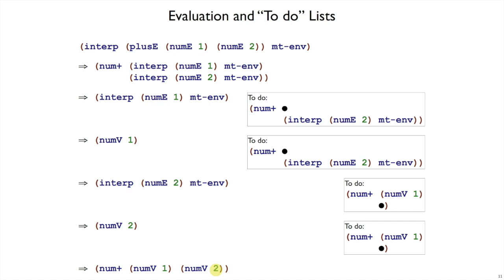So this is conceptually how plate's working, and the important conceptual part here is this notion of a to-do list that records what we need to do in the future after we've gotten to a value with the current expression.